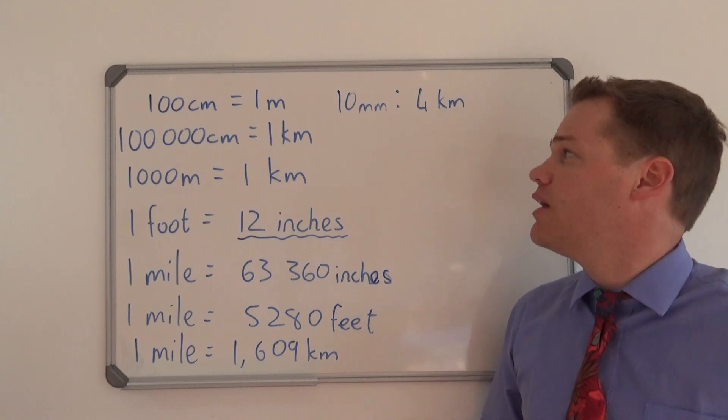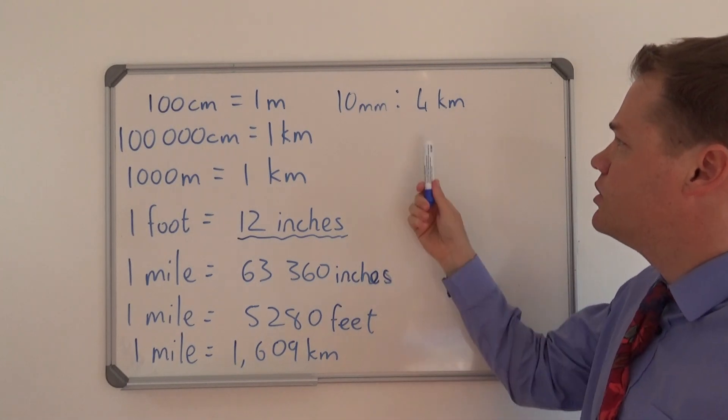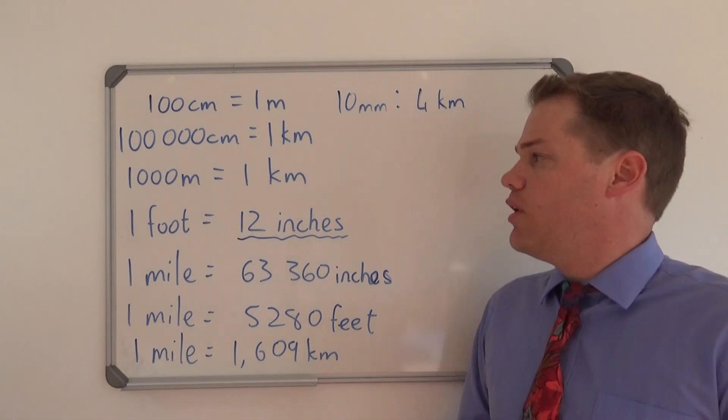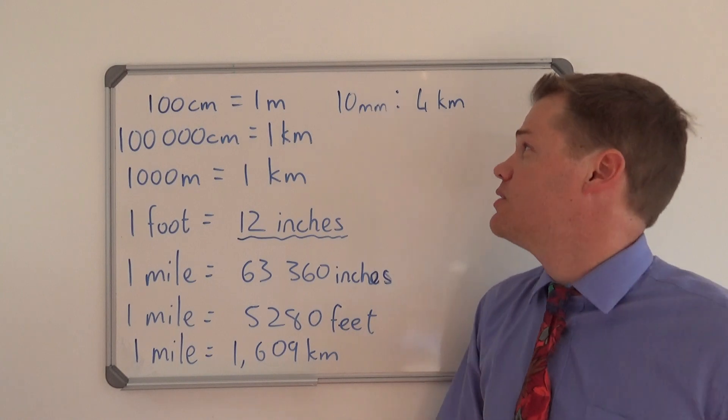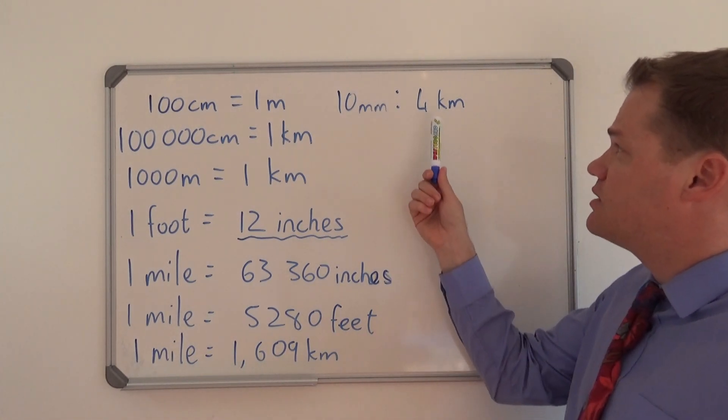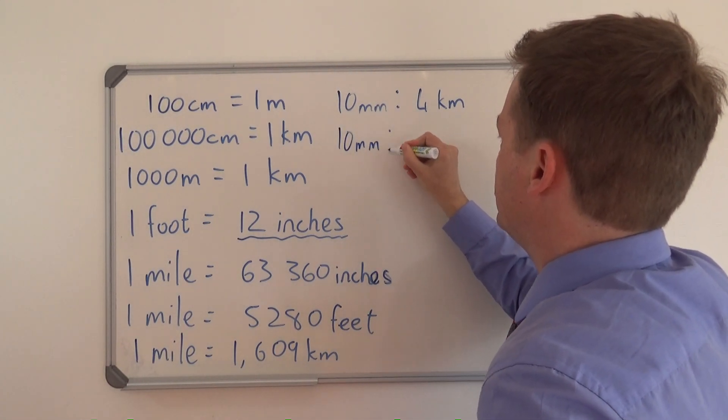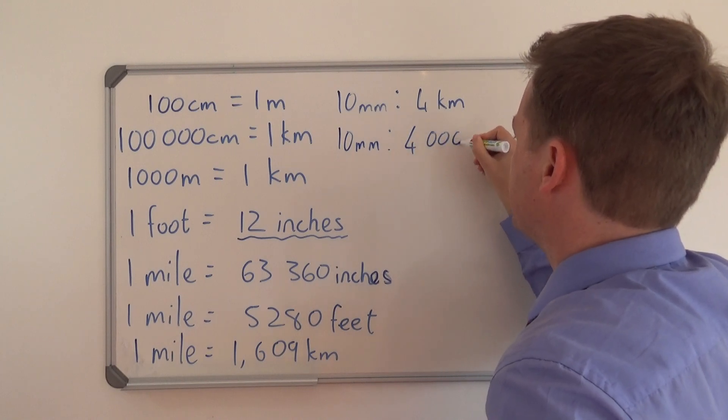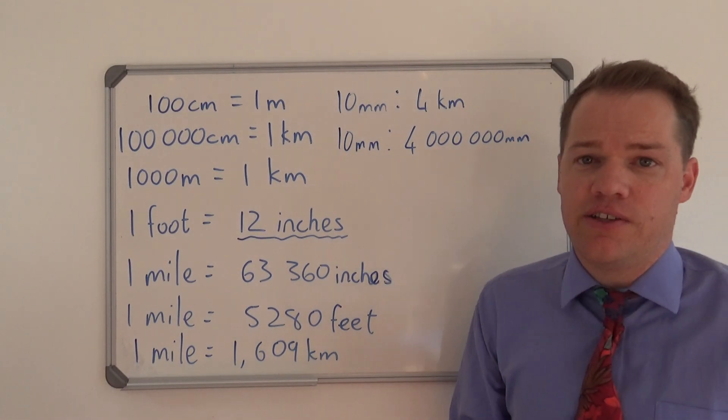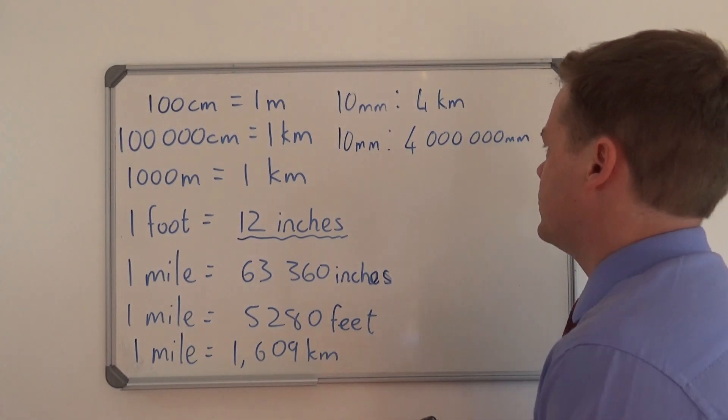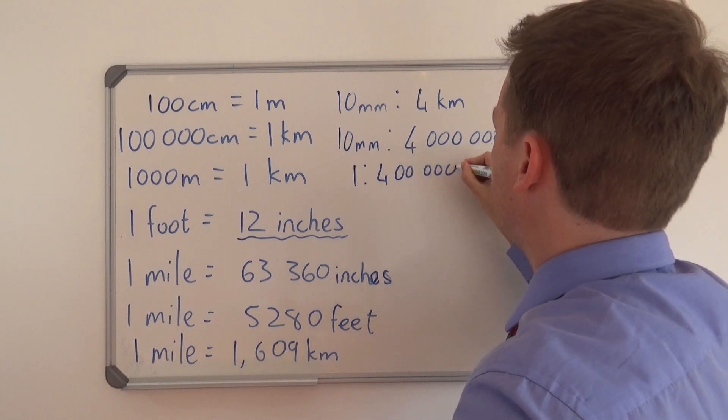Let's do just one more example. So your teacher has given you another scale. 10 millimeters on the map represents 4 kilometers. So we have to convert kilometers to millimeters here. Although I don't have the example here, we know that there's 1 million millimeters in 1 kilometer. So if we have 4 kilometers, we have to say times 1 million. So this is quite an easy calculation. So we have 4 million millimeters. Now we have to divide by 10 on both sides of the colon. And so the answer is 1 to 400,000.